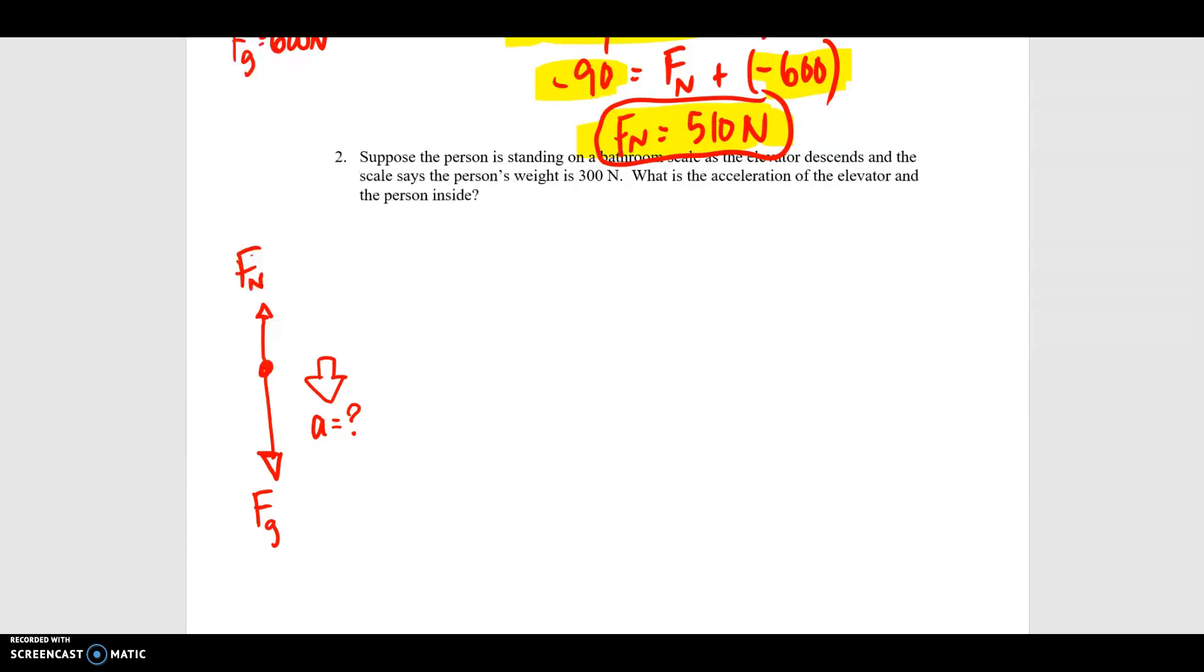In the second example, which we did not get to in class, a person standing on the scale as the elevator descends and it is accelerating, the scale says the person's weight is 300 newtons.